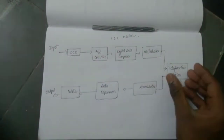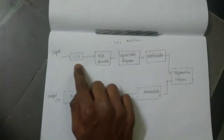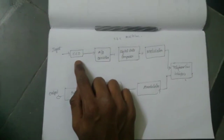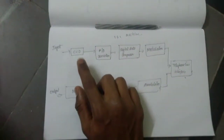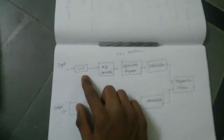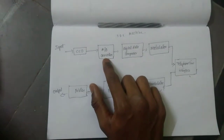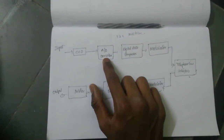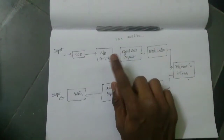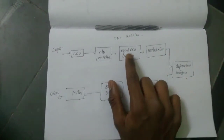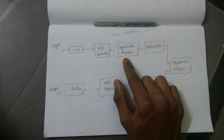So this is the transmission part of the fax machine. The CCD converts printed information into an analog electrical signal. This analog electrical signal is then sent to the A2D converter block, which performs analog-to-digital conversion. Then comes the digital data compressor.